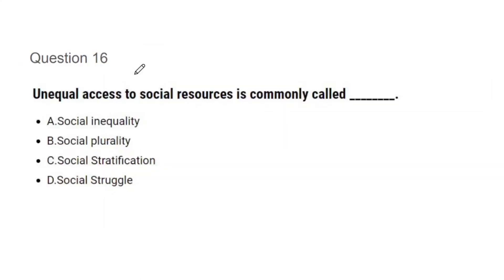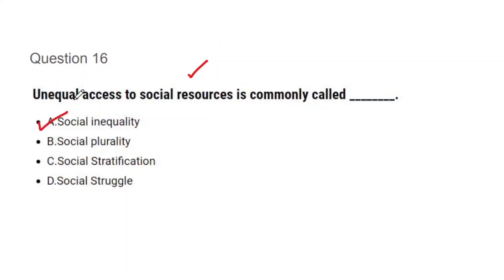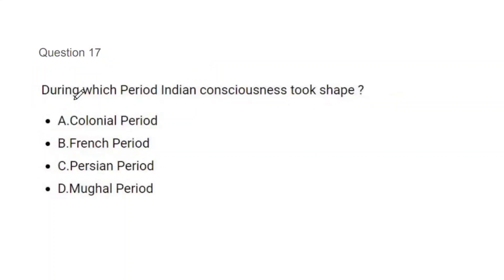Question 16: Unequal access to social resources is commonly called what? Options: social inequality, social plurality, social stratification, or social struggle. Very easy question. The correct answer is of course A — social inequality. If we cannot equally access social resources, that becomes social inequality.